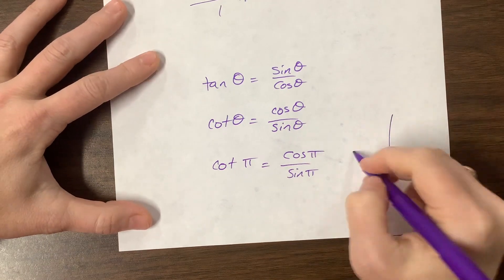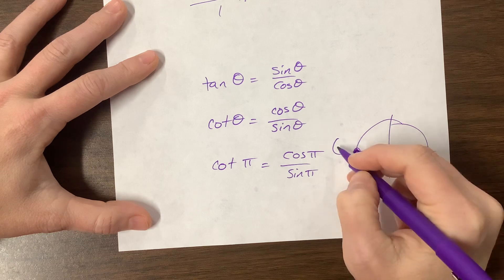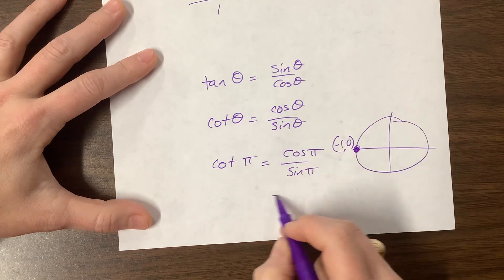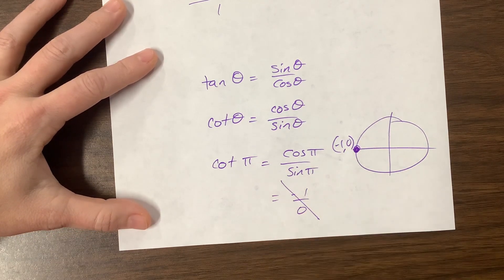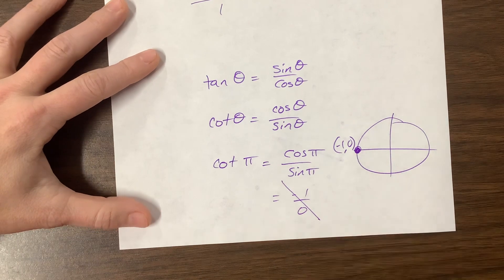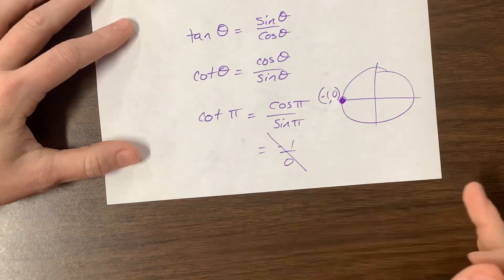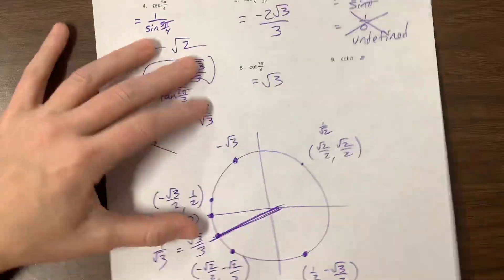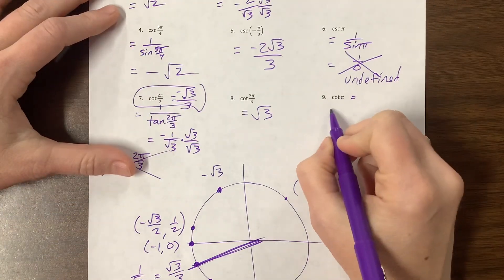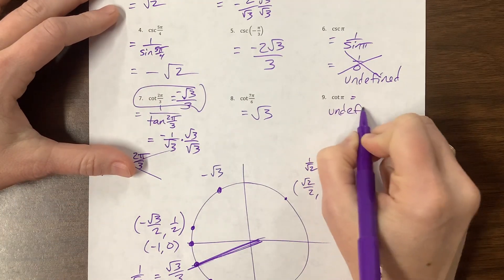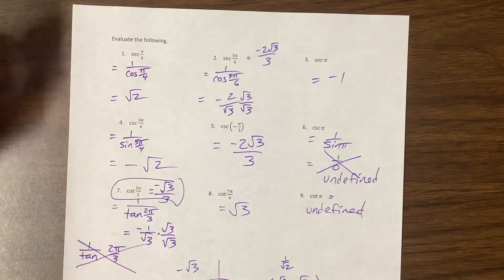So we want cosine of pi over sine of pi. Well, so let's go look. Pi is over here. My coordinates are negative 1, 0. So we're saying, oh, we want negative 1 over 0. Ah, no good. So this value is undefined. You are not Chuck Norris. You can't divide by 0. So cotangent of pi is undefined. And there we go. That was fun.